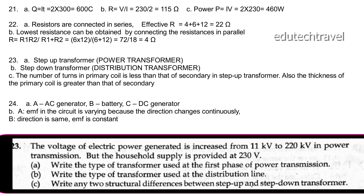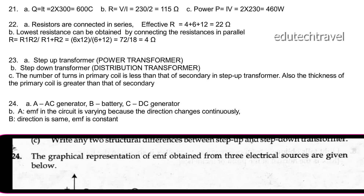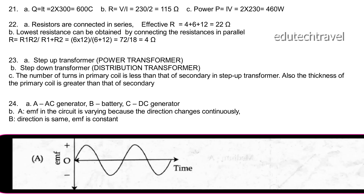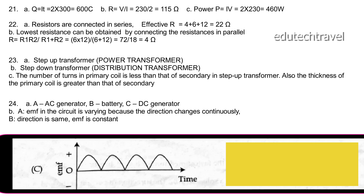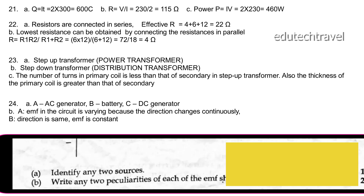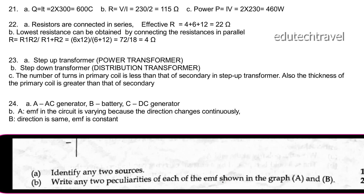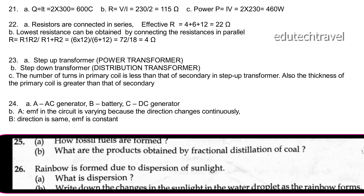Question 24: Observe the graph showing EMF from three electrical sources. Source A is an AC generator, source B is a battery, and source C is a DC generator.